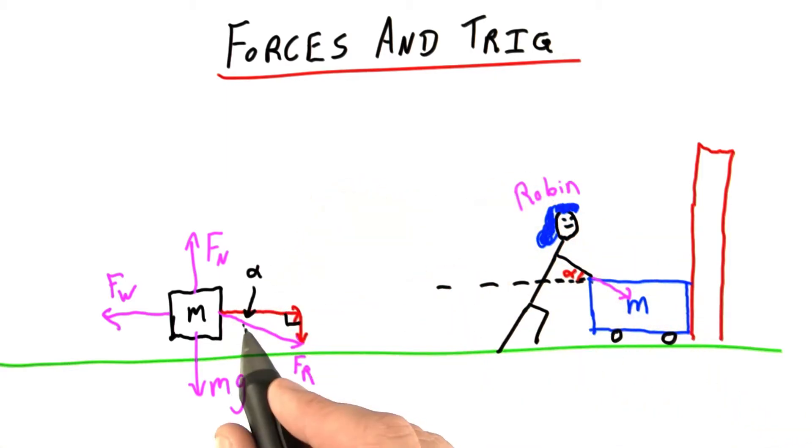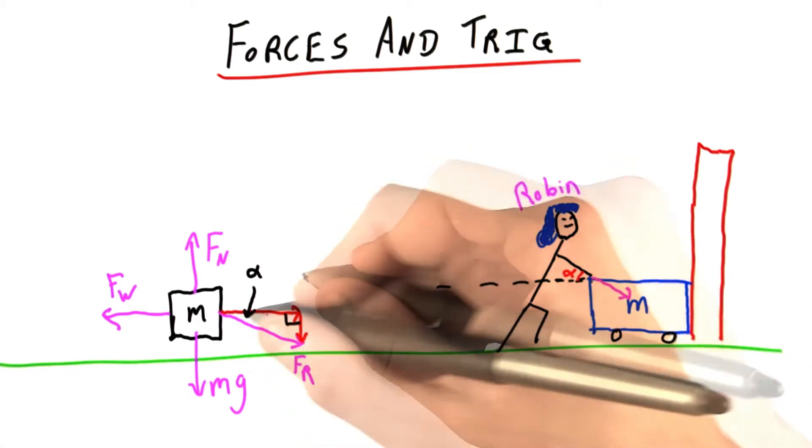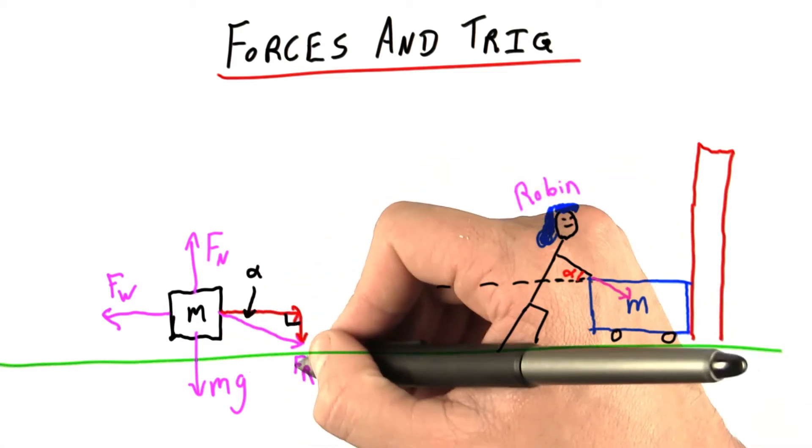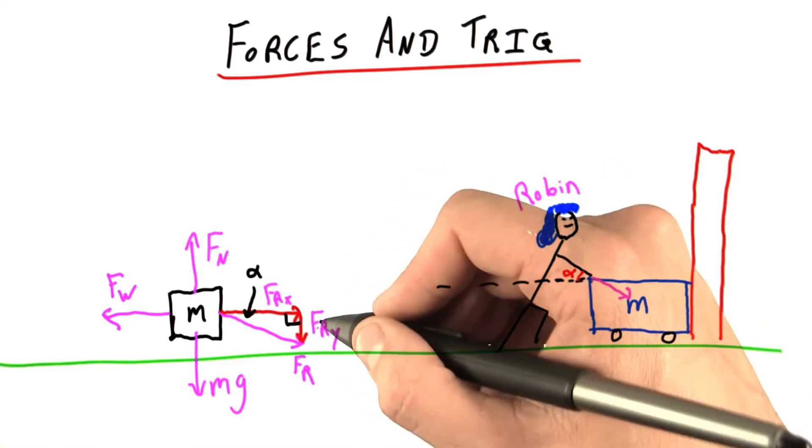Well, here's our right triangle, and now we see we get our angle alpha back again, and let's label these sides. Well, this is the horizontal component of Robin's pushing, and this is the vertical component. So I'm going to label them frx and fry.